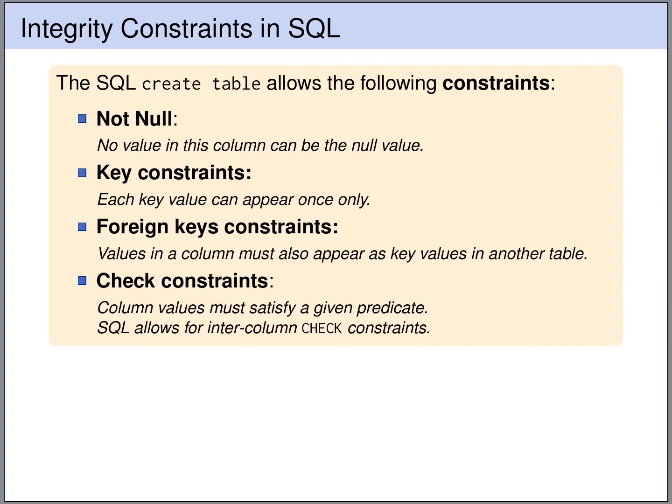Foreign keys allow us to refer to tuples in another table. We can also express check constraints — these are predicates, logical formulas. For example, the age must be at least 18, and the database management system will guarantee that these predicates are satisfied at all times. SQL even allows inter-column check constraints, so we can have logical formulas that compare or combine multiple columns. What is not possible with check constraints is to express conditions involving columns of multiple tables.